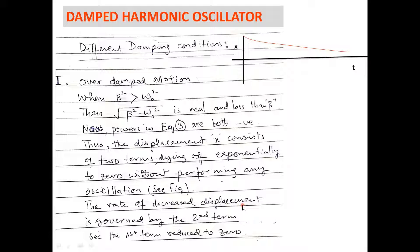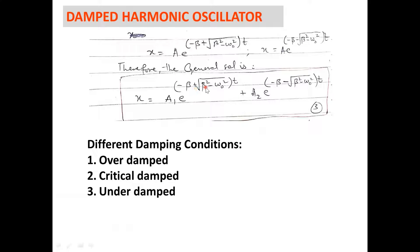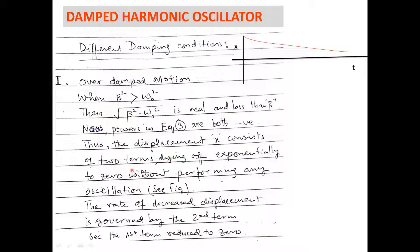Thus, the displacement x consists of two terms dying off exponentially to zero without performing any oscillation. The rate of decreased displacement is governed by the second term because the first term reduces to zero. Since beta-squared minus omega-0-squared under root is real and less than beta, the quantity (minus beta plus beta) would be zero, so the first term contributes nothing, and the whole contribution comes from the second term.